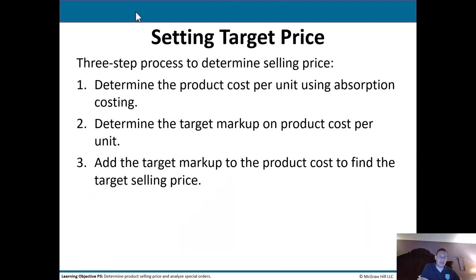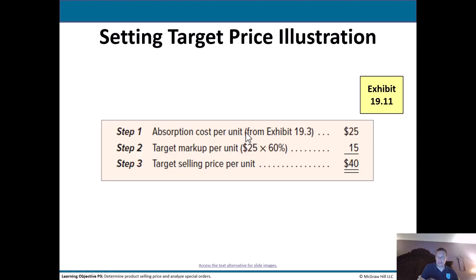The next topic is target price. There are three steps to determine the selling price: first, determine the product cost per unit using absorption costing; second, determine the target markup on the product cost per unit; third, add the target markup to the product cost to find the target selling price. For example, if the absorption cost per unit is $25 and the target markup is 60%, you multiply $25 × 0.6 = $15, giving a target selling price of $40 per unit.